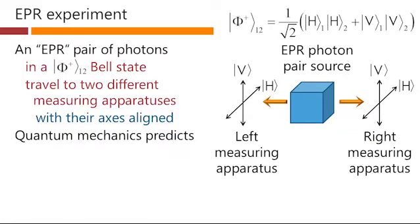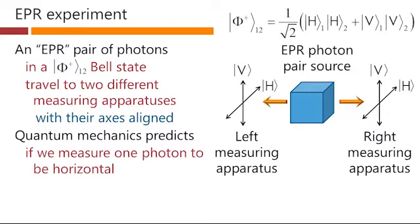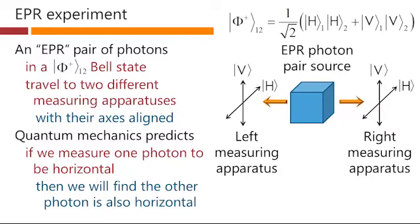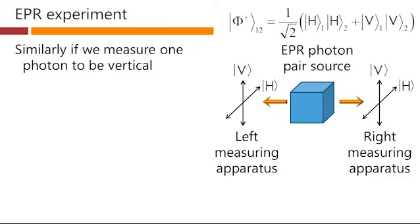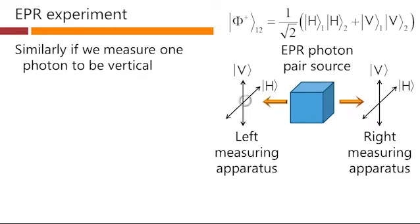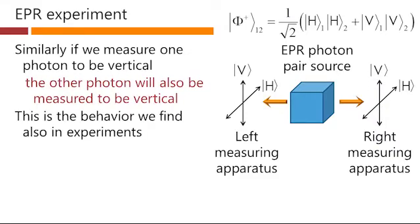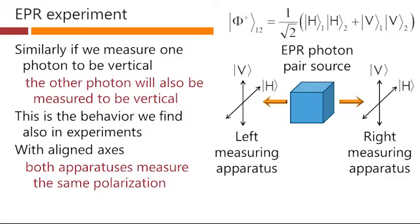Quantum mechanics predicts that if we measure one photon to be horizontal, say the left one, then we will find the other photon is also horizontal when we put the photons in this state to start with. Similarly, if we measure one photon to be vertical, the other photon will also be measured to be vertical. This is the behavior we find also in experiments. With aligned axes, both apparatuses measure the same polarization for these Bell state photons.